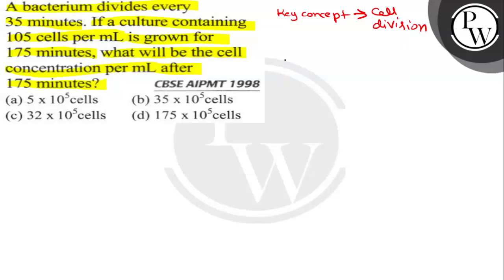The basic formula which is needed to solve this question is N equals N naught into 2 to the power n, where this N represents the final number of cells which we have to find out, and N naught represents the initial number of cells.